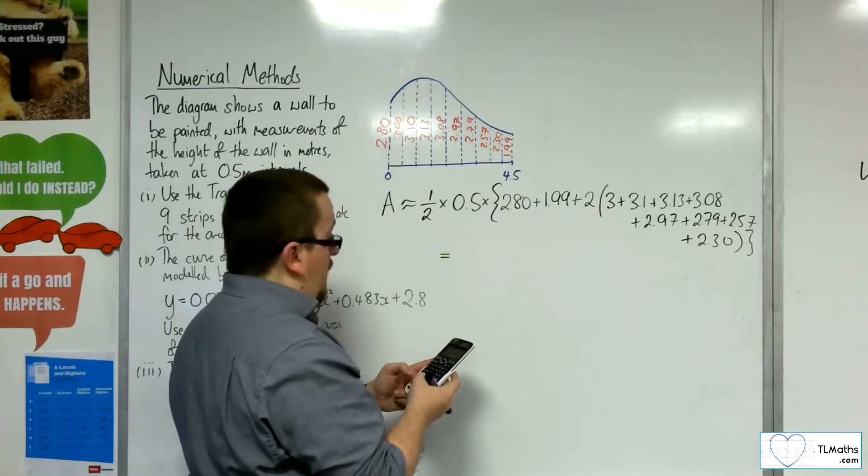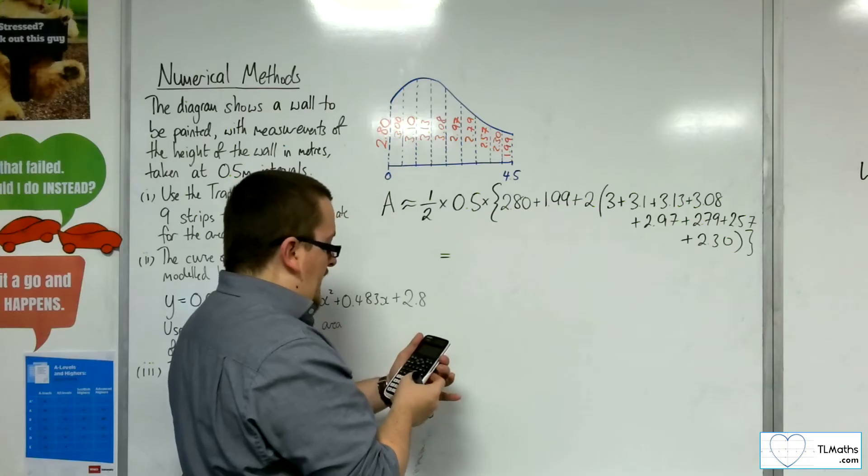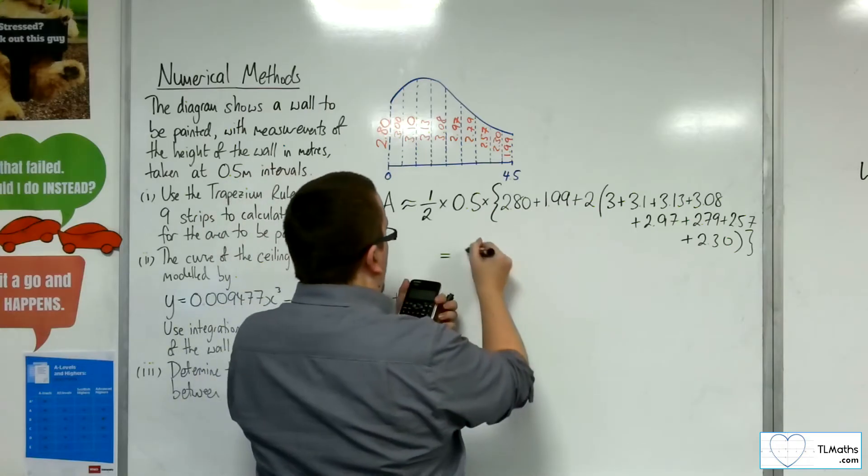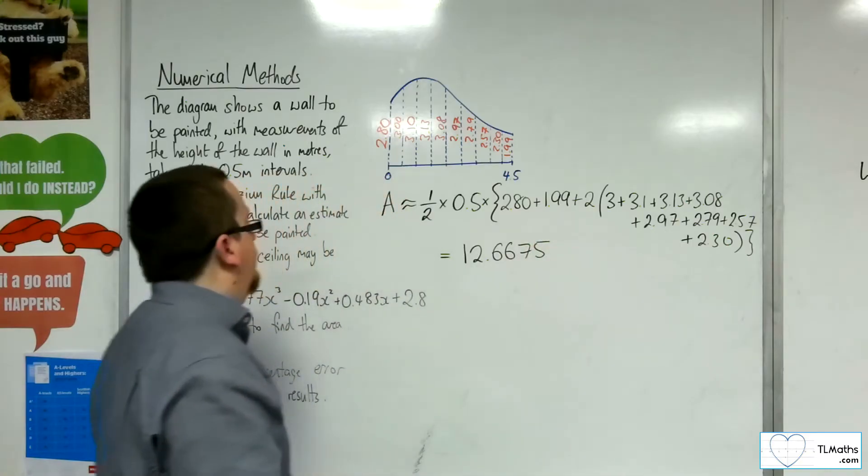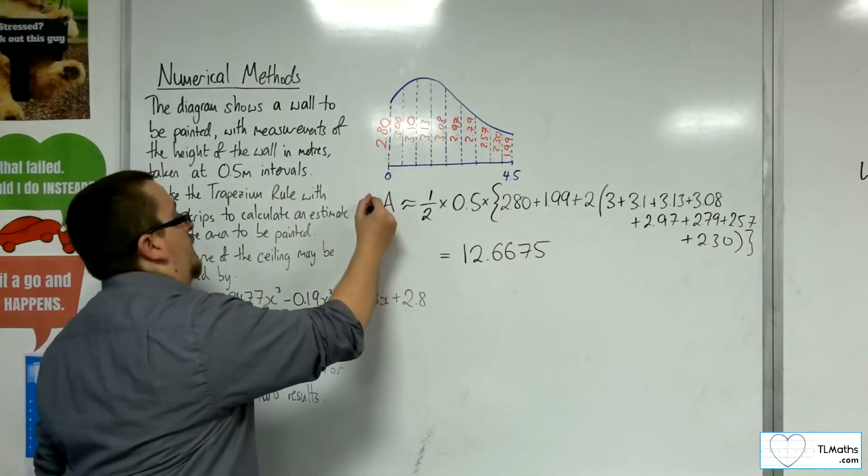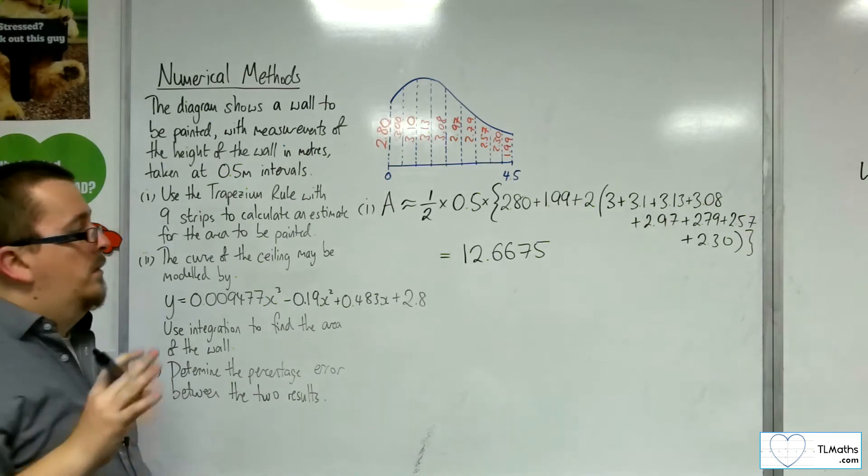Halve it, and halve it again. So that gets us 12.6675. That is the trapezium rule estimate.